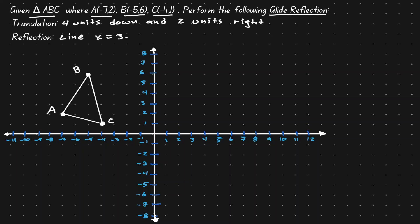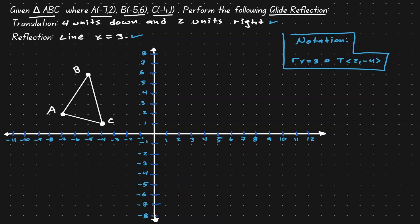Let's write this down using the correct notation. First is the translation of four units down and two units to the right. Then we follow with the reflection over the line x equals 3. We open a circle and on the left-hand side we write our second transformation, which is the reflection over x equals 3. Remember, we read this composition from right to left — first the translation, then the reflection.